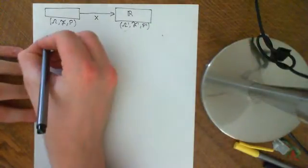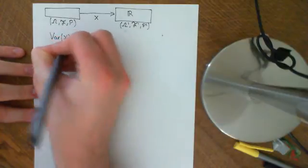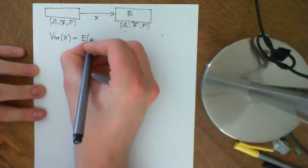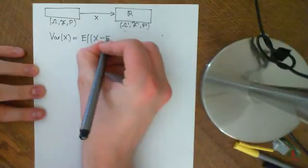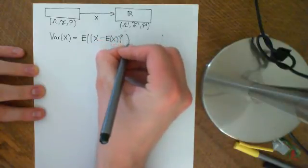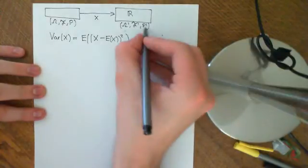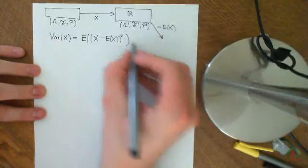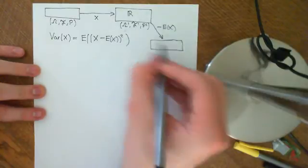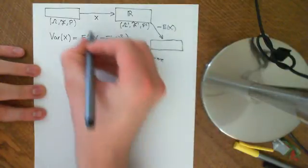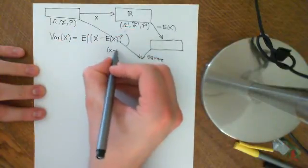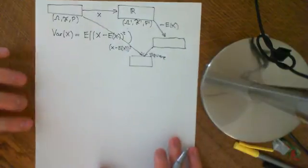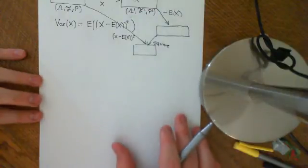We defined the variance a few videos ago. We defined the variance of a random variable to be the expected value of X minus E of X, all of that squared. So basically we define a new random variable: subtract E[X] from every real number here to get X minus E[X], then square it to get (X − E[X])². The expected value of that new random variable is what we define to be the variance.